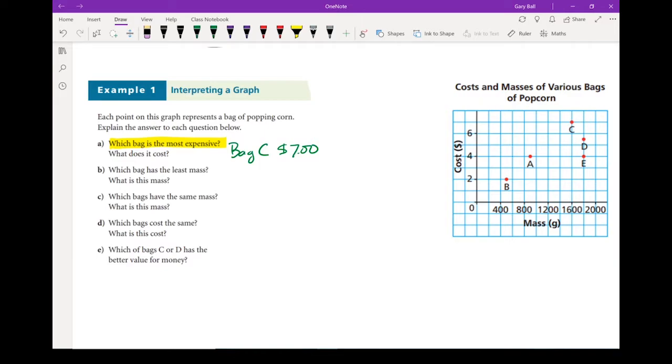Next question: Which bag has the least mass? We look at the one that is the farthest in this direction on the mass axis, and that is bag B. And its mass is about 500 grams. Remember we're going up, if you look at here, we're going up 200 grams per space.